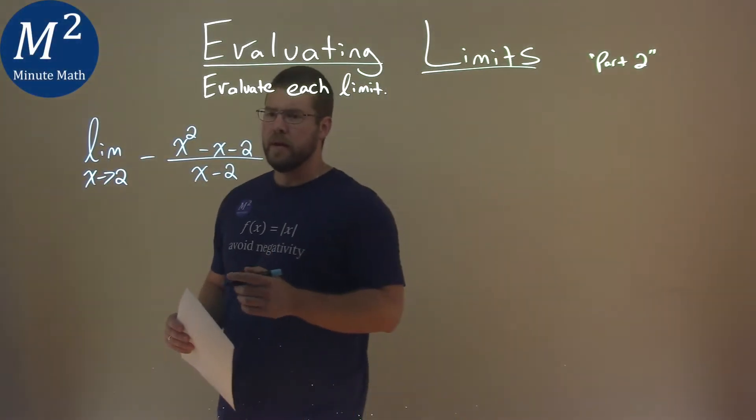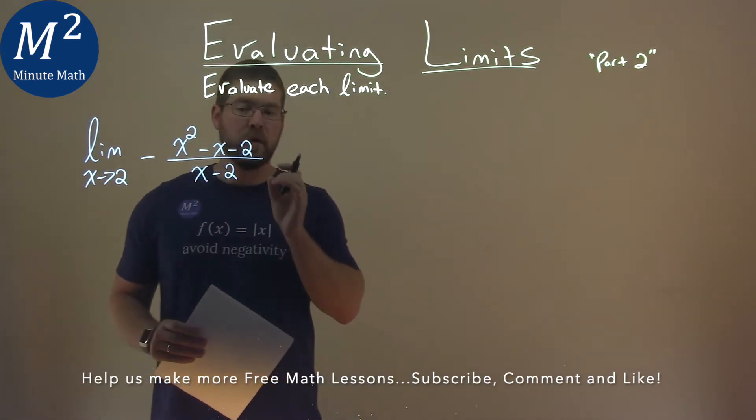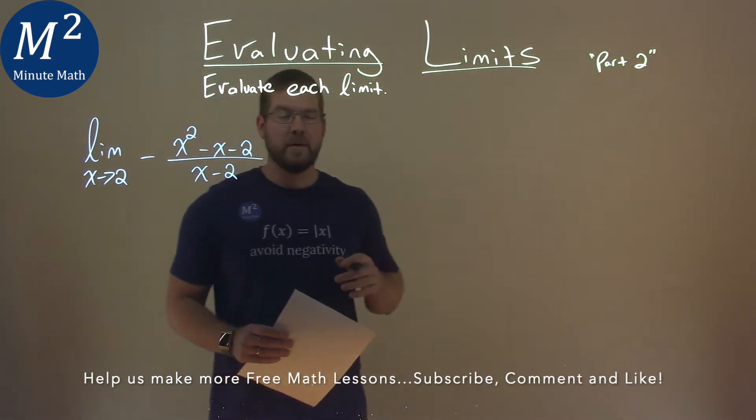We're given this problem right here, the limit as x approaches 2 of negative x squared minus x minus 2 over x minus 2, and we want to evaluate this.